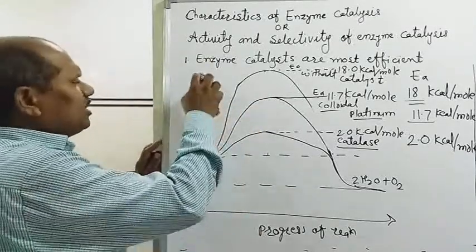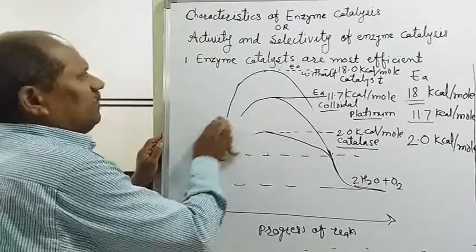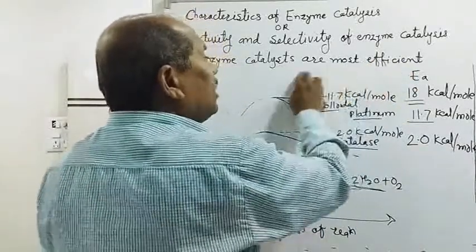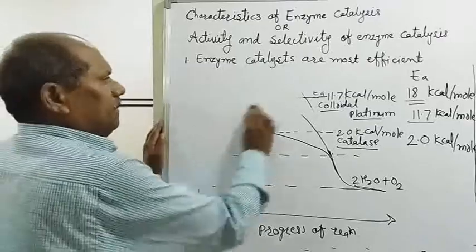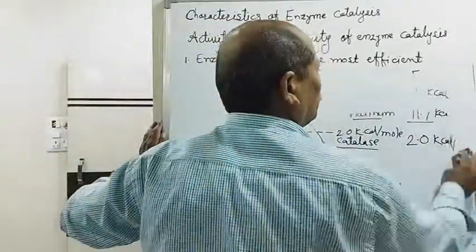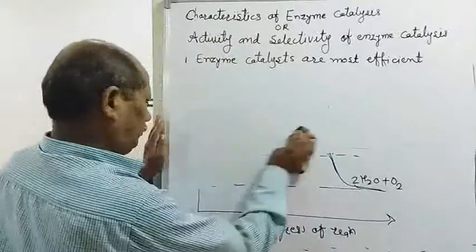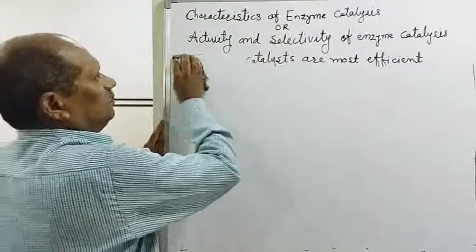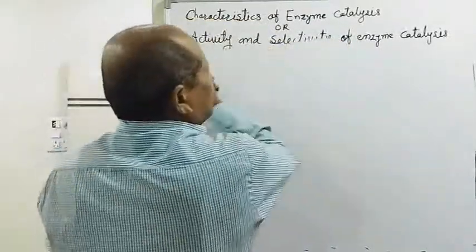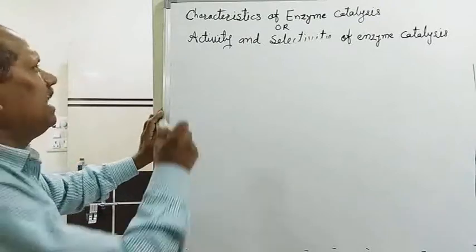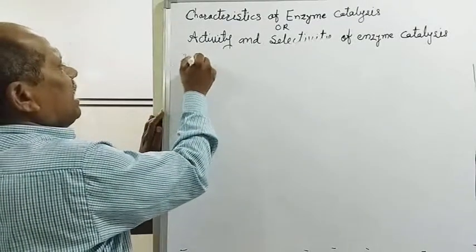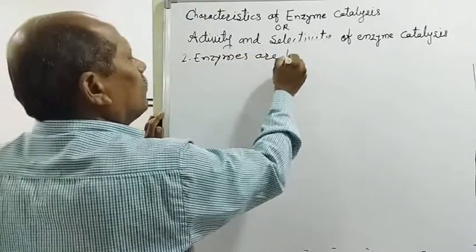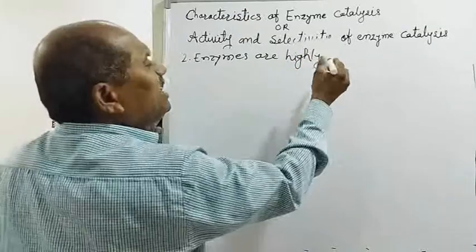The second characteristic of enzyme catalysis is that enzymes are highly specific. What does this mean? When we carry out the hydrolysis of urea — NH₂-C(=O)-NH₂ — upon hydrolysis, it gives 2NH₃ + CO₂. We use the enzyme urease as the catalyst for this reaction.